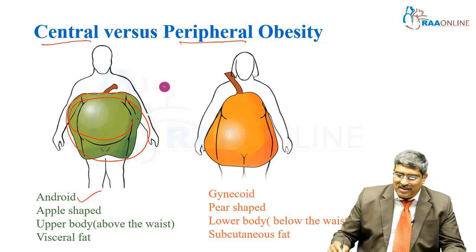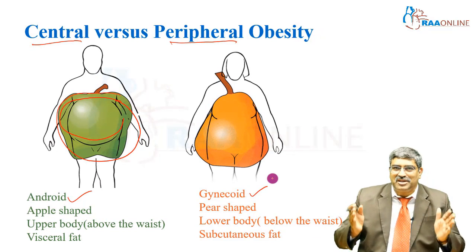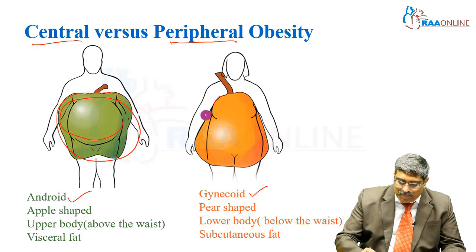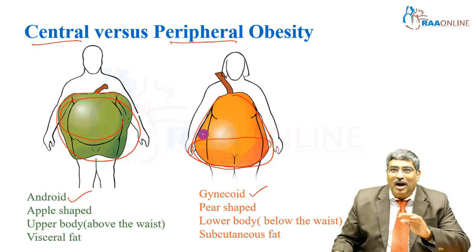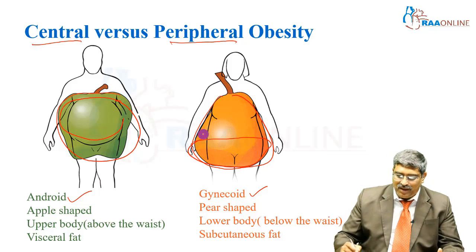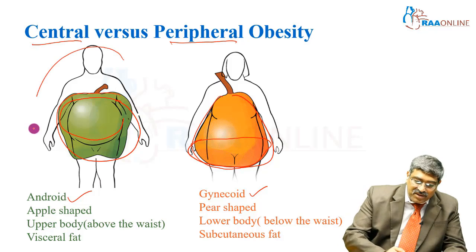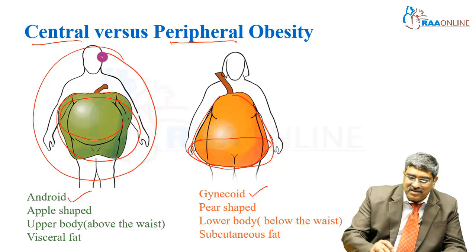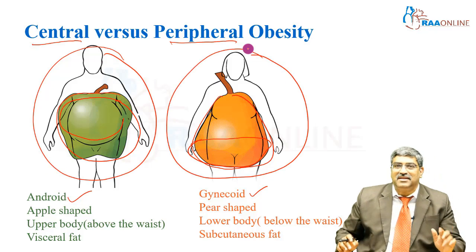Peripheral obesity is called gynecoid because of its shape, and it is called pear-shaped obesity. Here the obesity is on the lower body, not the upper body, and it is mostly subcutaneous fat. Central obesity is dangerous, while peripheral obesity is less dangerous.